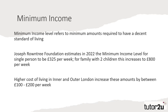The minimum income measure is an objective measure based upon the average outgoings of an individual or family, and suggests an income required for that household to achieve a decent standard of living. Using data from the Joseph Rowntree Foundation, this figure is estimated to be £325 per week for a single person living outside of London, and almost £800 a week for a family of two adults and two children.